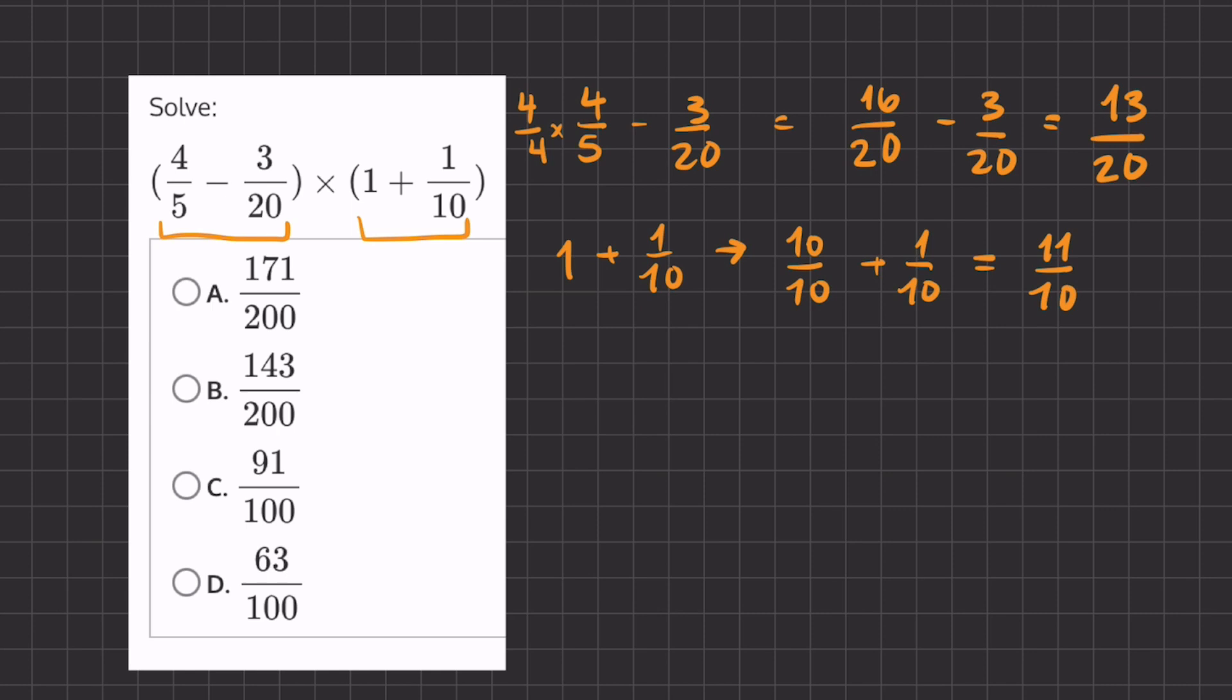And now we have 2 fractions that we solved from the inside of our parentheses, and now we can multiply them to one another. So we have 13 over 20 times 11 over 10, and if we multiply straight across